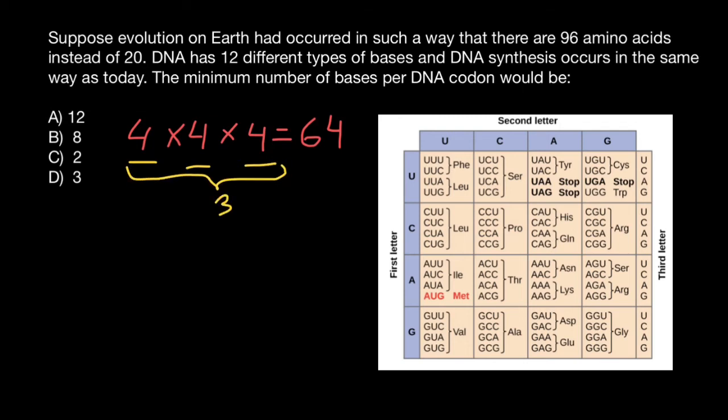Take a look. We have 96 amino acids and 12 different types of bases instead of four. Then you now know that if we will have only 12 bases and our codon consists of only one position, we can only specify 12 amino acids.